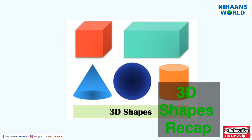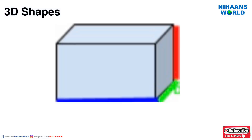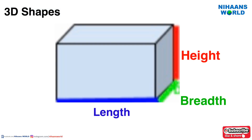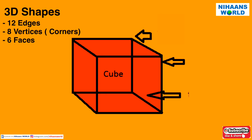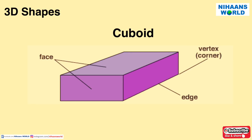Let us recap. Solid shapes have 3 measurements: length, breadth, and height. So a solid shape is also known as 3-dimensional or 3D shapes. Solids have faces, edges, and vertices. A cuboid has 12 edges, 8 vertices, and 6 faces.